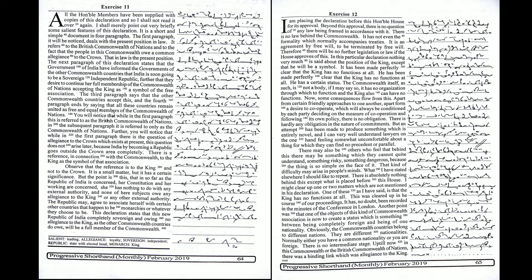Obviously the Commonwealth countries belong to different nations — they are different nationalities. Normally, either you have a common nationality or you are foreign; there is no intermediate stage. Up till now, in this Commonwealth or the British Commonwealth of Nations, there was a binding link which was allegiance to the king.